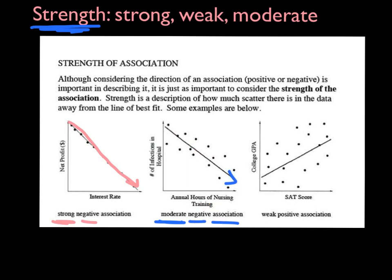The last one looked at people's SAT scores and their college GPA, and the points were all over the place. There wasn't a really strong association — it was going up, so as your SAT score got higher, so did your college GPA in general. But these points are so far spread apart. That's called a weak association. That's how you describe the strength, and we'll practice that more in class tomorrow.